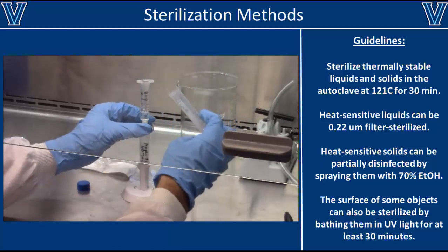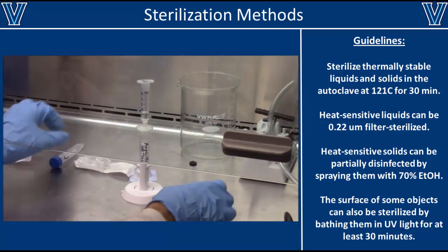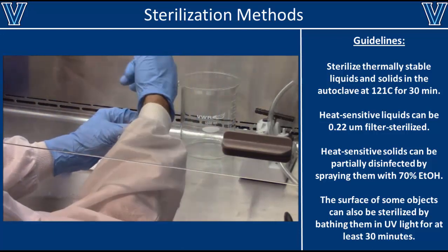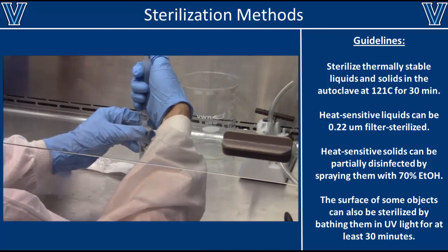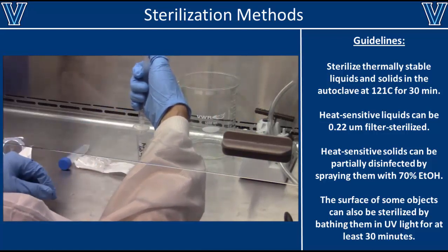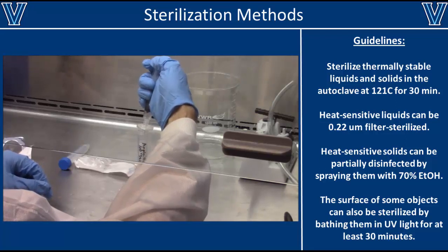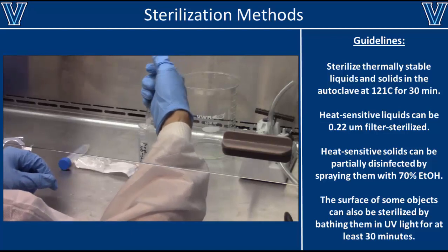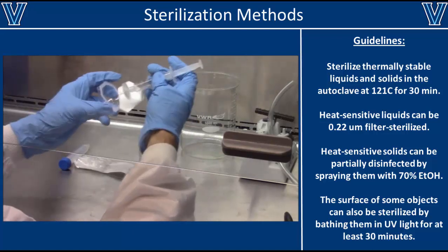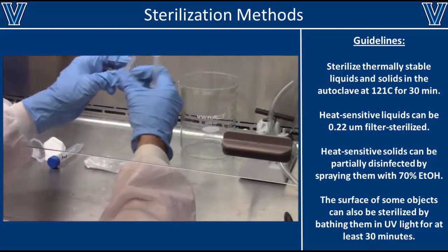To use the 0.2 micron filter, remove the plunger and attach it to the filter. Pour your liquid solution directly into the syringe and put the plunger back. The liquid is then sterilized by forcing it through the filter. If at any point you notice a large amount of back pressure, do not press harder — the syringe filter will fail and spray its contents everywhere. Instead, remove the current filter and replace it with a new one.